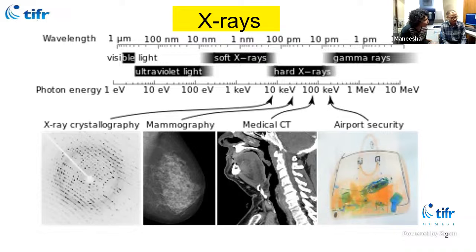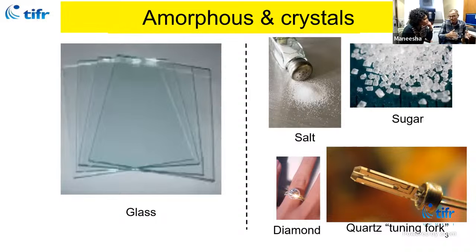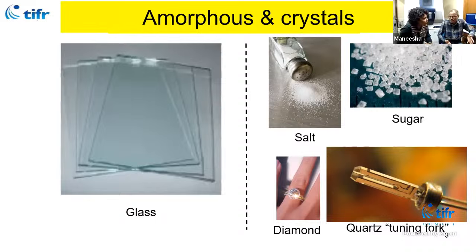Why do we actually use X-rays here? Because visible light has a wavelength of 300 to 780 nanometers. We cannot use that for looking at atomic arrangements in matter around us like crystals, amorphous materials, and other things. We need a wavelength comparable to atomic spacing. The material around us can be distinguished into two parts: amorphous and crystalline. Glass is an example of amorphous material — no definite arrangement of atoms, they are randomly arranged.